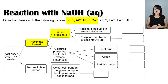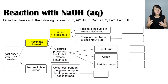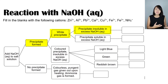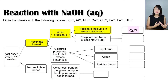To narrow down to a single cation, we can further add more sodium hydroxide. If the white precipitate remains insoluble in excess sodium hydroxide, we can confirm that calcium ion is present.